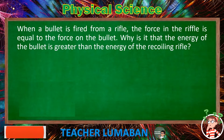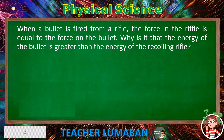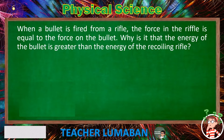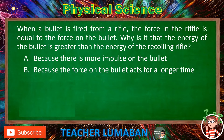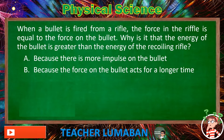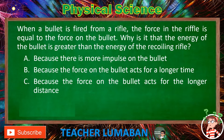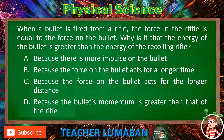When a bullet is fired from a rifle, the force on the rifle is equal to the force on the bullet. Why is it that the energy of the bullet is greater than the energy of the recoiling rifle? Letter A: Because there is more impulse on the bullet. Letter B: Because the force on the bullet acts for a longer time. Letter C: Because the force on the bullet acts for a longer distance. Letter D: Because the bullet's momentum is greater than that of the rifle.